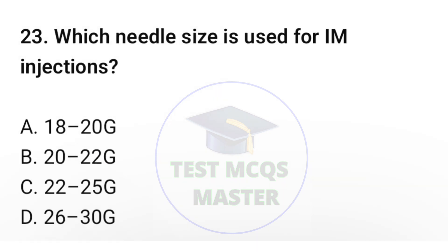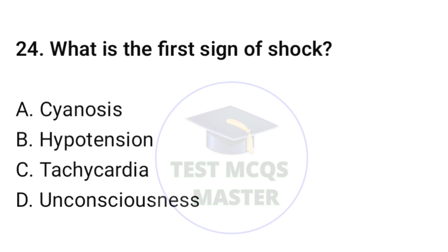Question number twenty-three: Which needle size is used for IM injections? The correct option is B: 20 to 22 gauge. Question number twenty-four: What is the first sign of shock? The correct option is C: tachycardia.